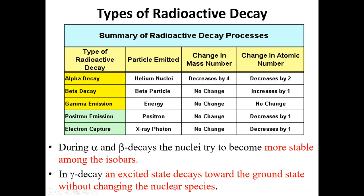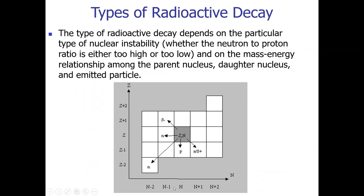The types of radioactive decay can also be summarized in a chart where the change in atomic number is plotted against the change in neutron number. The type of decay depends on the particular nuclear instability — whether the neutron-to-proton ratio is too high or too low — and on the mass-energy relations among the parent nucleus, daughter nucleus, and emitting particle.